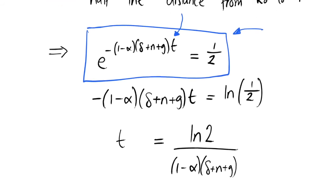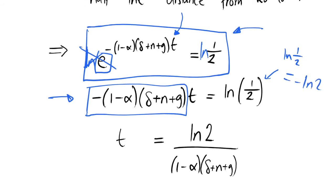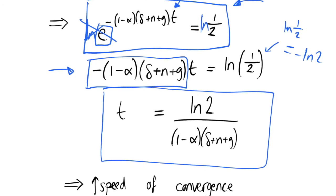We can take the natural log of both sides of this equation to find t. Because this is an exponential, it cancels out, and we get our equation. Dividing through by minus (1 − α)(δ + n + g), and noting that ln(1/2) equals minus ln 2 so the negatives cancel out, we get that our half-life t is equal to ln(2) divided by (1 − α)(δ + n + g). This is our t-half, and this is what we think of as the speed of convergence.